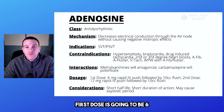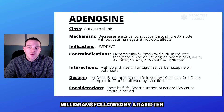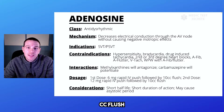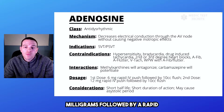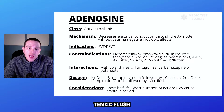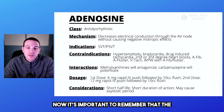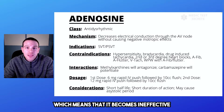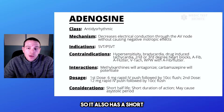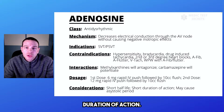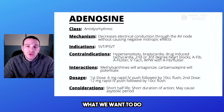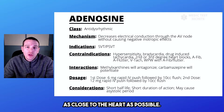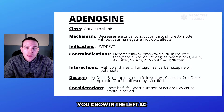The dosage: the first dose is 6 milligrams followed by a rapid 10cc flush. The second dose is 12 milligrams followed by a rapid 10cc flush. It's important to remember that this drug has a short half-life, which means it becomes ineffective very quickly. It also has a short duration of action.